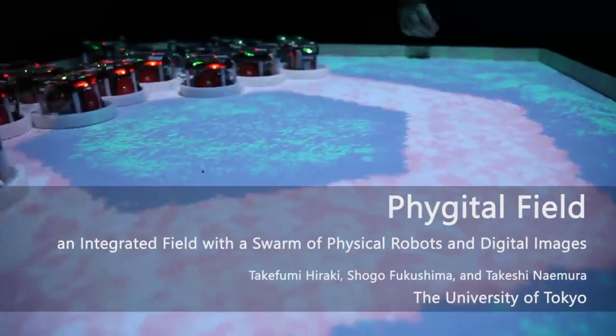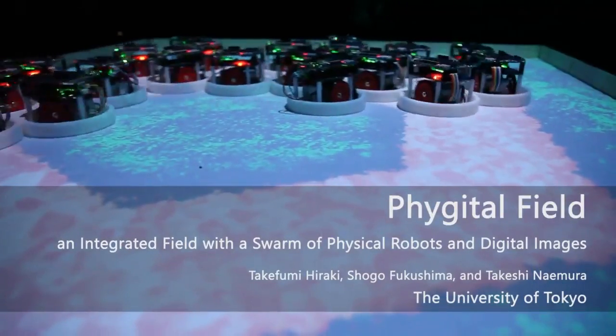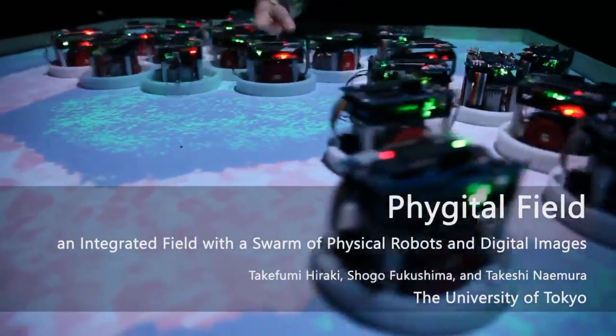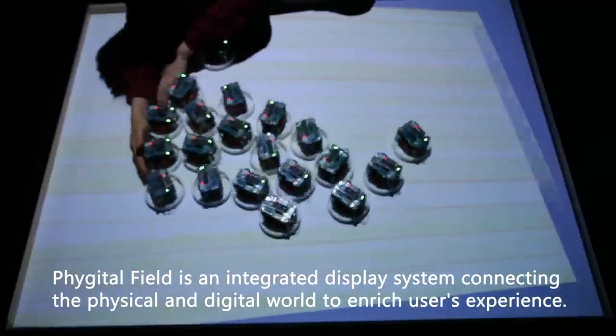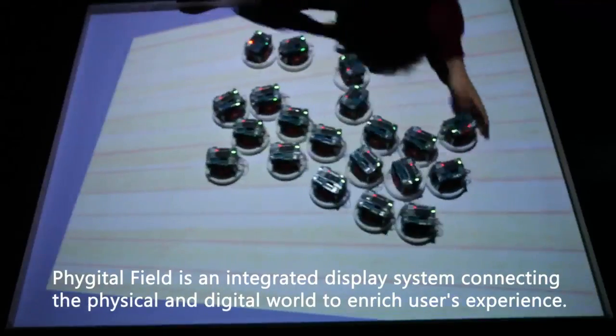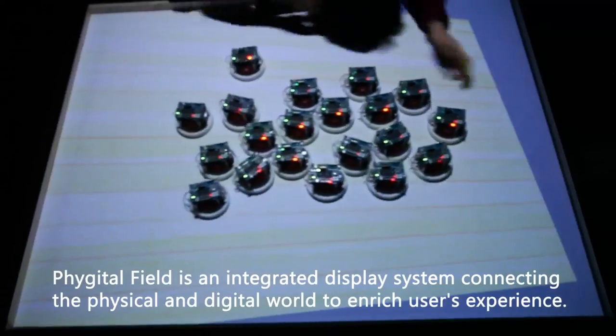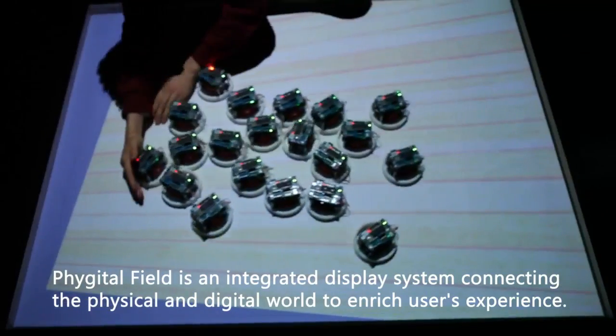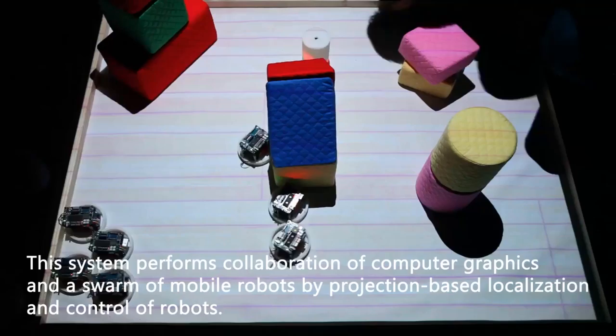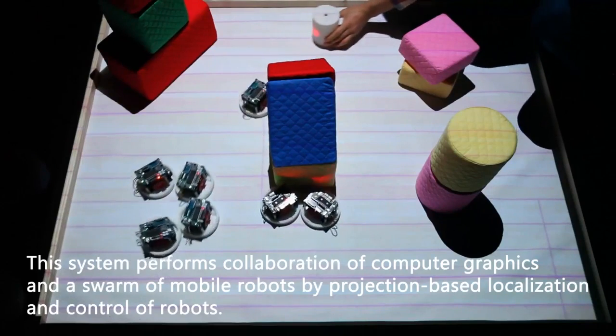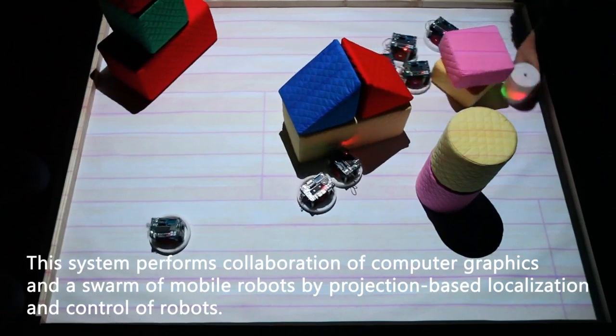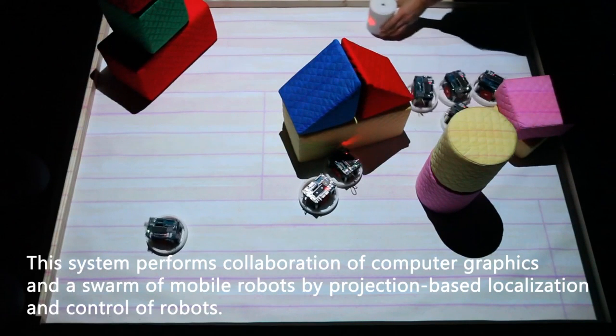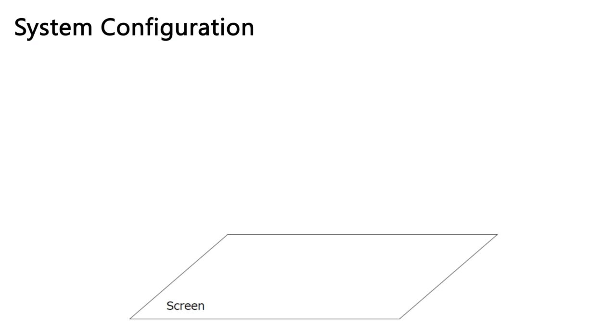Digital Field is an integrated field with a swarm of physical robots and digital images. This display system connects the physical and digital world to enrich users' experience. The system performs collaboration of computer graphics and a swarm of mobile robots by projection-based localization and control of robots.